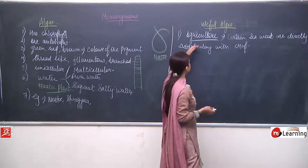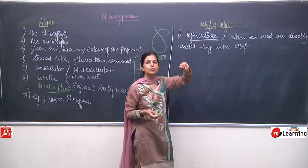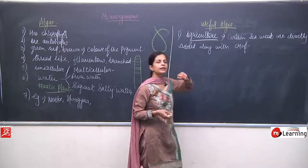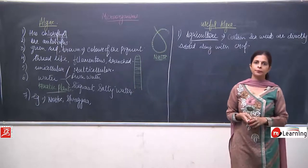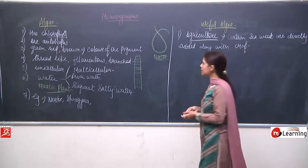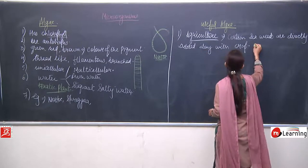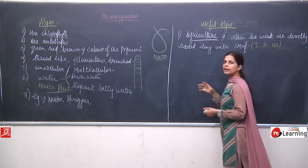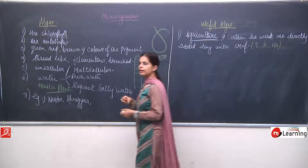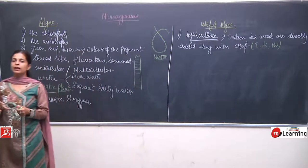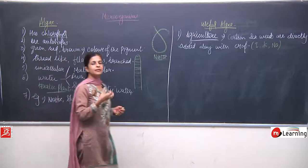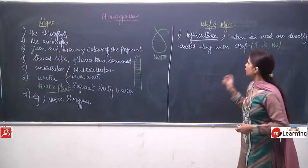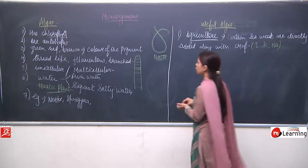To summarize: certain seaweeds are directly added along with the crop in the field. These seaweeds are very rich in iodine, potassium, and sodium. When they get decomposed and mixed with the soil, they give lots of nutrients to the growing crops. This is a very important use of algae in agriculture.